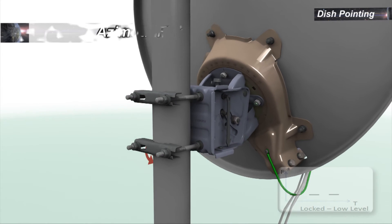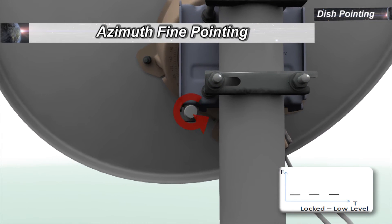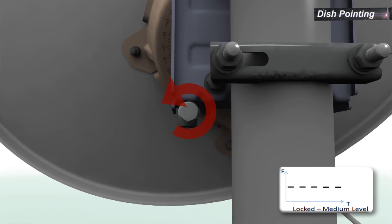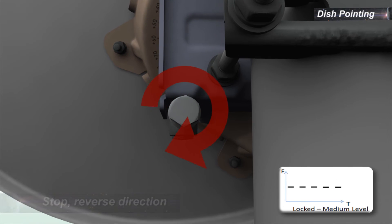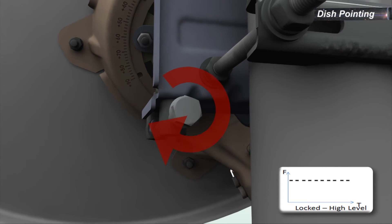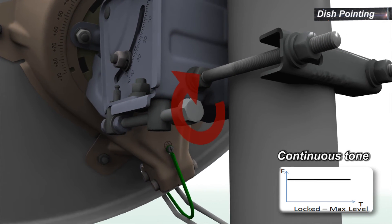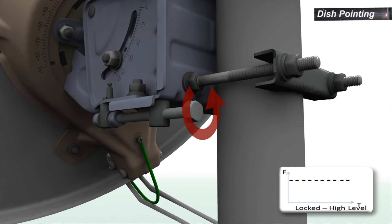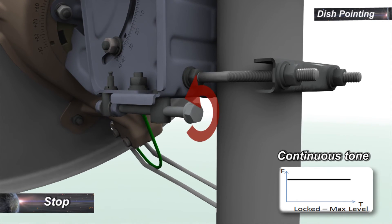To start azimuth fine pointing, change the azimuth settings on the dish in a random direction until you can hear the audio indication reduced tone and staggering rate. Stop and reverse the direction. At some point, you should hear the pitch increase until you get a continuous tone. Continue in the same direction until staggering tone starts again. Stop and reverse direction once again. As soon as you hear the continuous tone, stop.